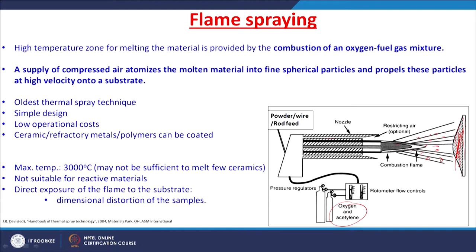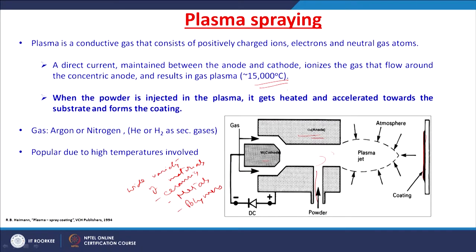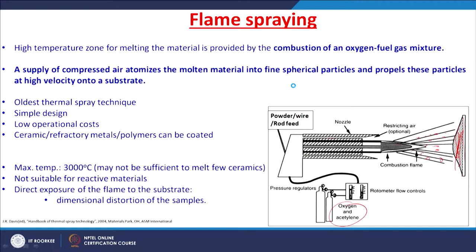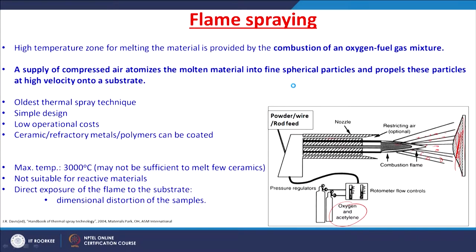This is the oldest thermal spray technique — simple in design with low operational costs. You can coat polymers or refractory metals, but at 3,000°C, some high-melting ceramics like borides and carbides may not be melted. For those, plasma spraying is better, generating up to 15,000°C. Also, this technique is not suitable for reactive materials as oxidation and reaction products can form, and direct flame exposure may cause dimensional distortion.